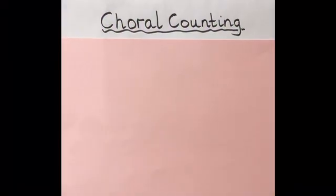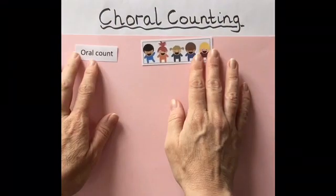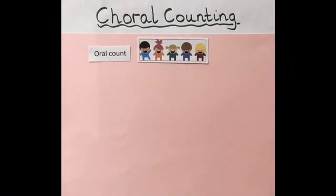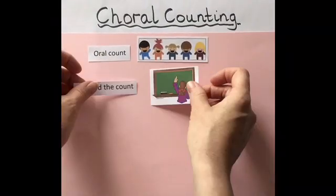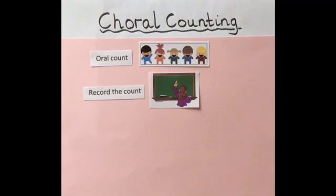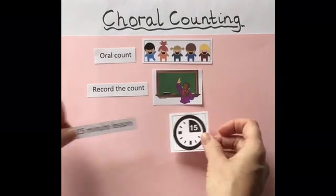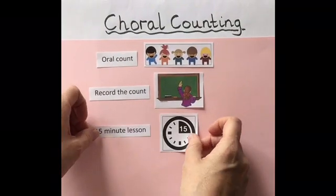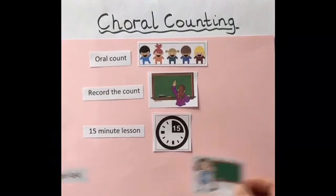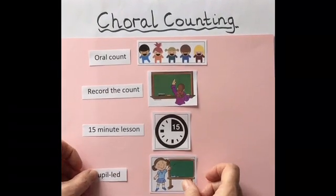Choral counting is an activity in which the teacher leads children in counting aloud together by a given number. As the class calls out each number, the teacher records the count on the board. This is a 10-15 minute lesson which is pupil-led and a rich learning experience for all learners.